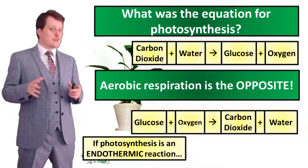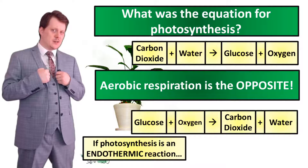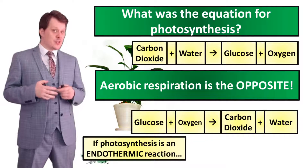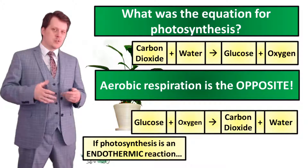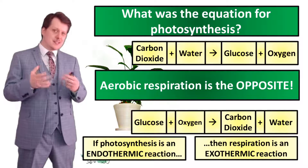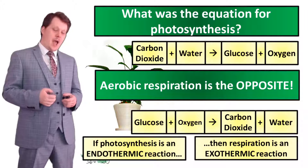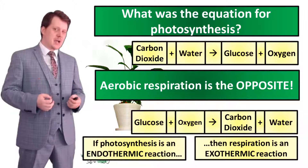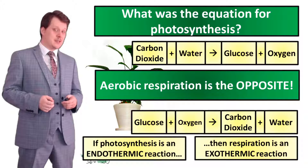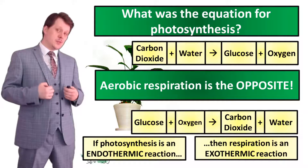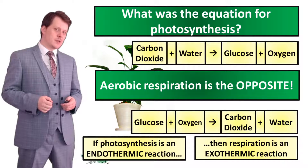So if photosynthesis is a reaction that has to take in energy, and aerobic respiration is the opposite, then aerobic respiration must be a reaction that releases energy into the surroundings. Because it's an exothermic reaction releasing energy into its surroundings, it enables us to maintain a body temperature of 37.5 degrees.